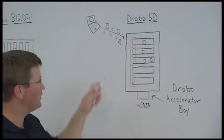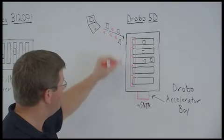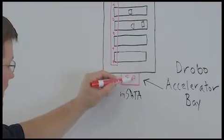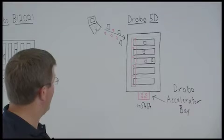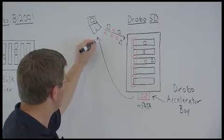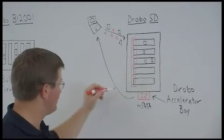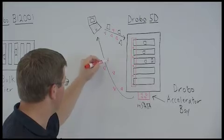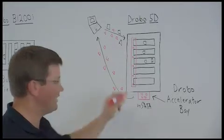Now what's really cool is in the background, this data that is transactional in nature and hot also will make its way to the mSATA device. So when the host reads data, instead of reading that transactional data off of the hard disk drives, it will read it right off of the mSATA device. So it's really fast, very high performance access to your data.